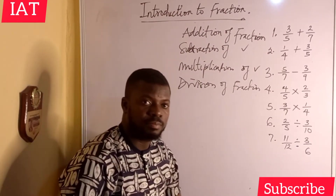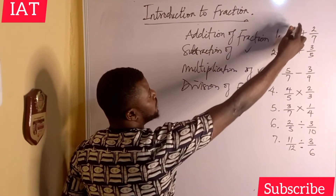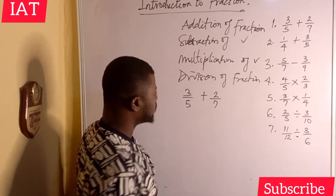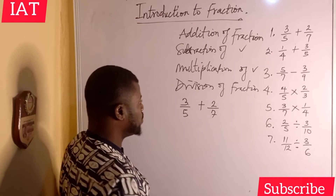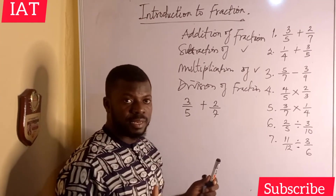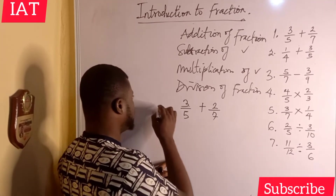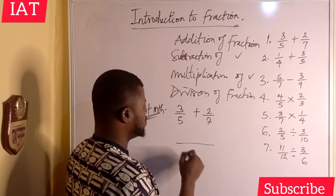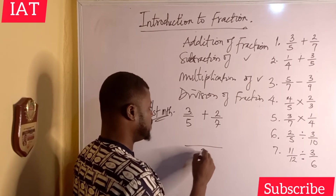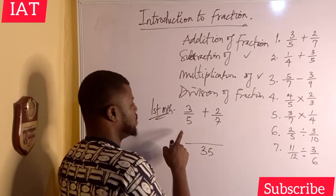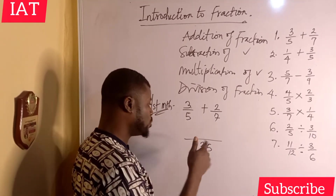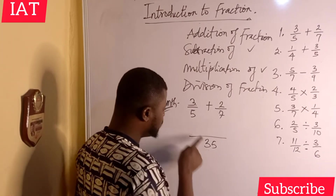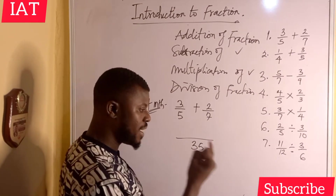Addition of fraction is when two fractions are added together. For example, the first question is three over five plus two over seven. In the first method, the LCM of five and seven is found by multiplying them: five times seven gives 35. Then five goes into 35 seven times, and seven goes into 35 five times.